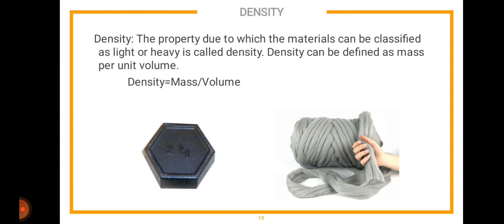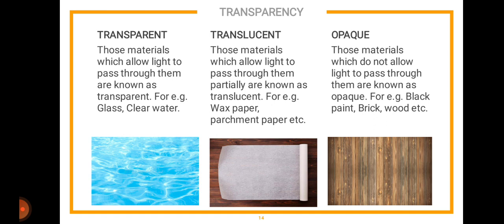Next up we have density. Density is a bit different from actual weight. The property due to which materials can be classified as light or heavy is called density. Density is defined as mass per unit volume — the formula is: Density = Mass ÷ Volume. For example, 2 kg of iron and 2 kg of wool: the density of iron is greater because its structure is more compact, while wool is very light.